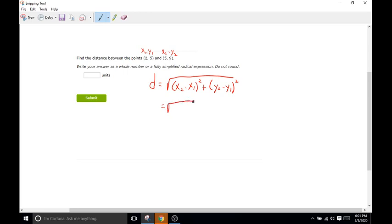So d equals the square root of x2 is going to be 5 minus x1, which is 2 squared. Okay, equals the square root of 5 minus 2 is going to be 3. So we're left with 3 squared. Let me erase that. It's a little icky.